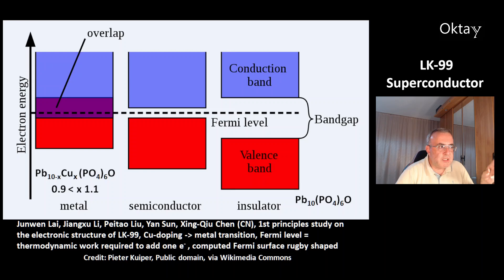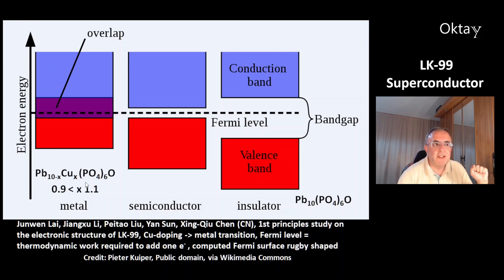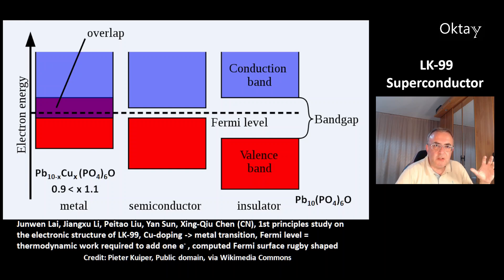There is a new paper from Zhongyan Lai, Jiangshu Li, Paitao Liu, Jiangsun, and Xingqiu Chen from China. They made a first-principles study on the electronic structure of LK99 and could show that copper doping leads to a transition, making lead apatite — originally an insulator — into a conducting metal. You can see the Fermi level here, which is the thermodynamic work required to add one electron. According to their model, the Fermi surface of LK99 has the shape of a rugby ball.